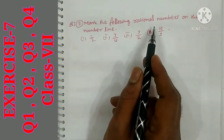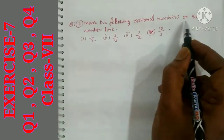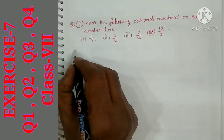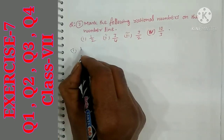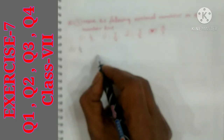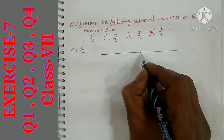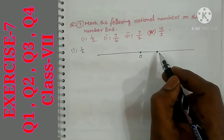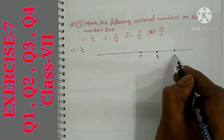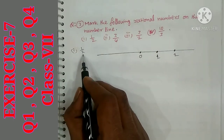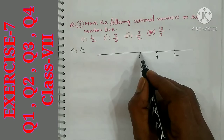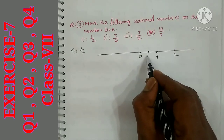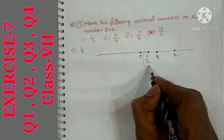Question number 3 is very easy and also important: mark the following rational numbers on the number line. I am doing it freehand — you should use a scale. First question: 1 by 2. Draw the number line with 0 on the left. Positive means right side. Mark 1 to the right. 1 by 2 is the midpoint between 0 and 1.